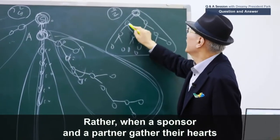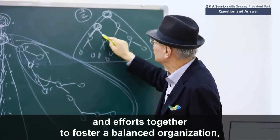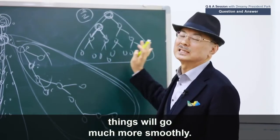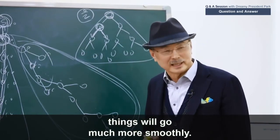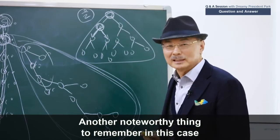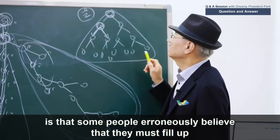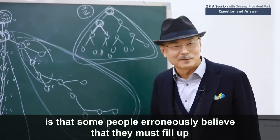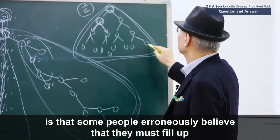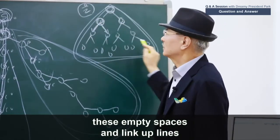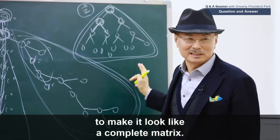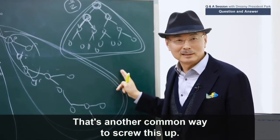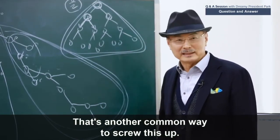Rather, when a sponsor and a partner gather their hearts and efforts together to foster a balanced organization, things will go much more smoothly. Another noteworthy thing to remember in this case is that some people erroneously believe that they must fill up these empty spaces and link up the lines to make it look like a complete matrix.